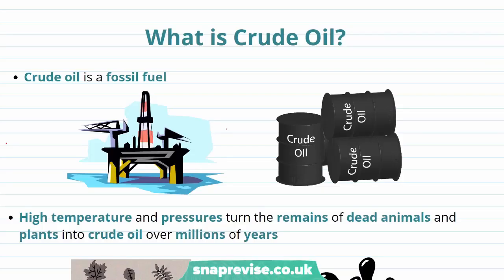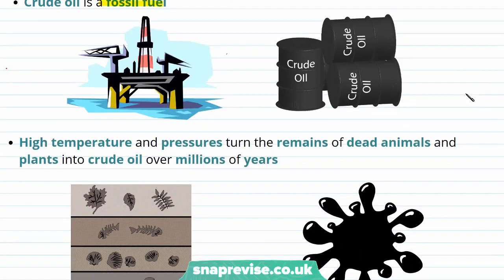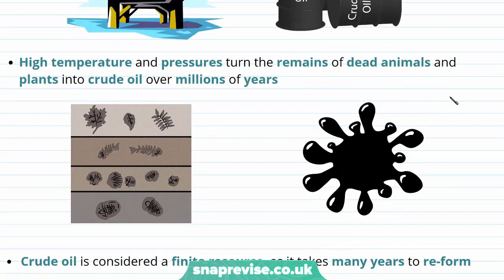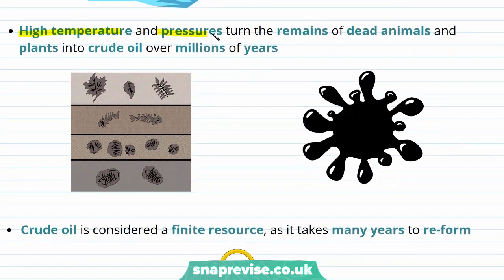Crude oil is an important source of useful substances for use in the chemical industry and as fuels. It is what is known as a fossil fuel and is obtained from the ground at an oil rig. Crude oil is known as a fossil fuel because it's made out of fossils. High temperatures and pressures under the surface of the earth have turned the remains of dead animals and plants into crude oil in a process that takes millions of years.